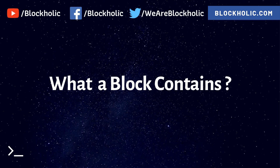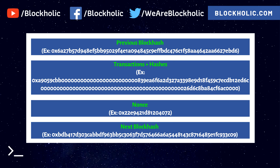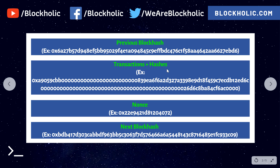In this video we're going to see what a block contains. We've been talking about the blockchain and a block with data and transactions. This is how a block looks like: every block will have a previous block hash, transactions plus hashes, and a nonce — I'll explain what nonce is. Every transaction will also have a next block hash.